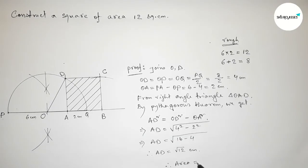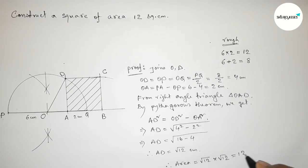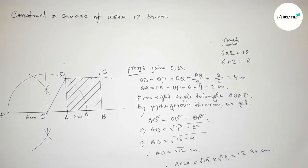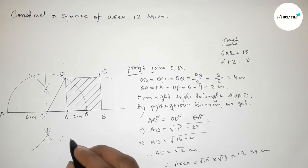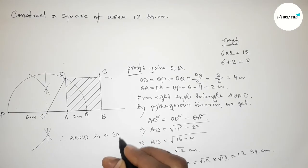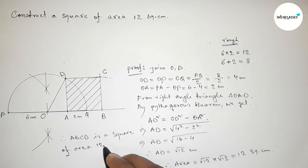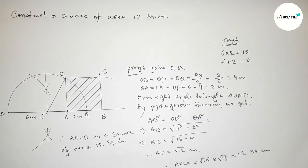Now finding the area of the square: Area equals side times side equals root twelve times root twelve equals twelve square centimeters. That's the proof. Therefore ABCD is a square of area twelve square centimeters, and by this way you can construct a square of area twelve square centimeters.